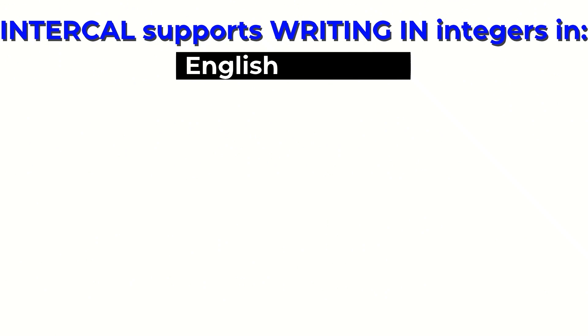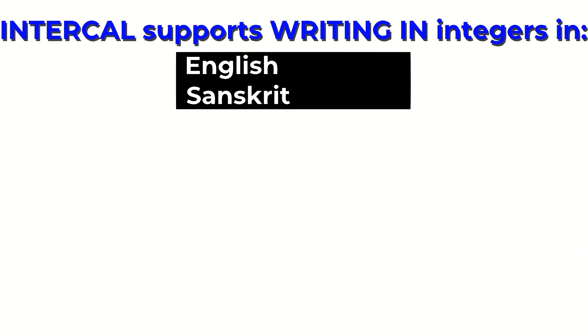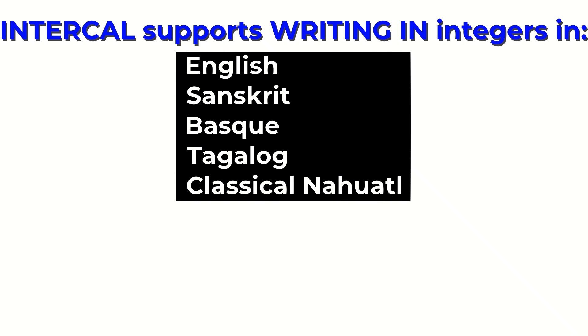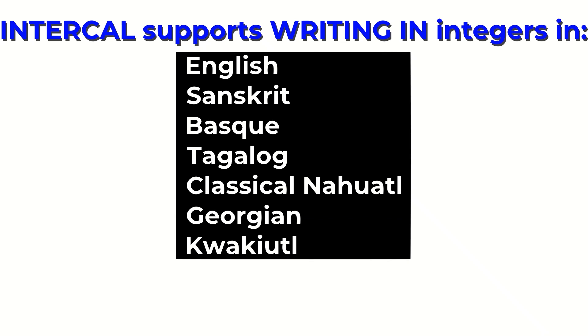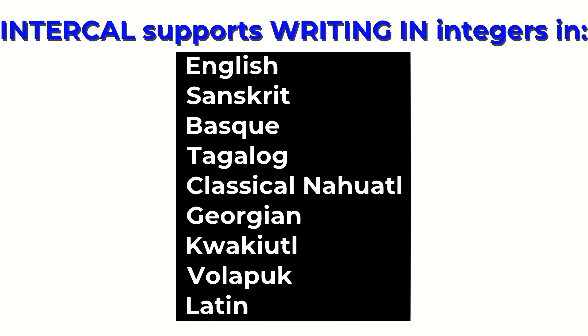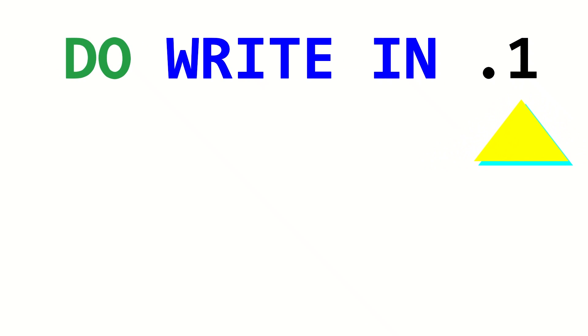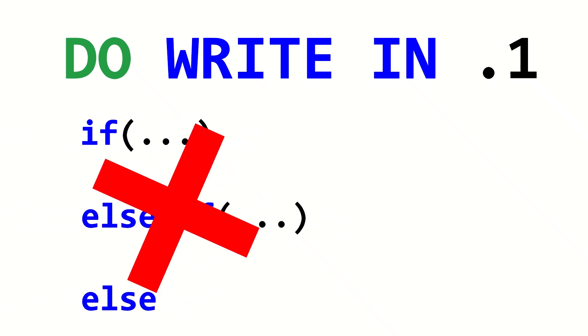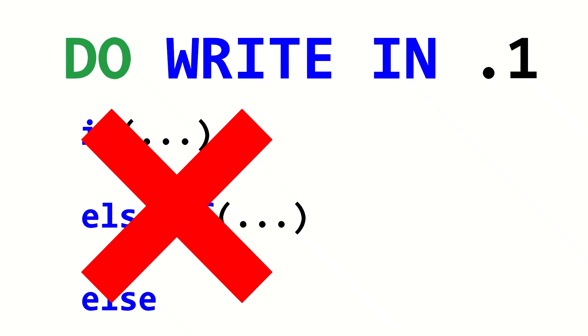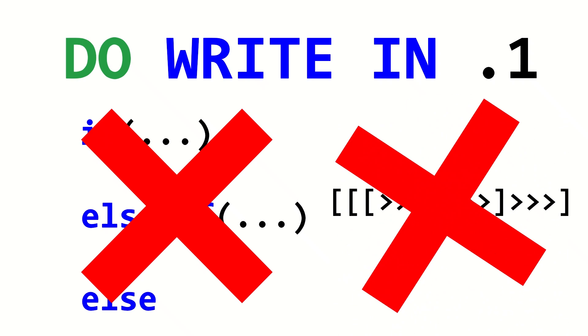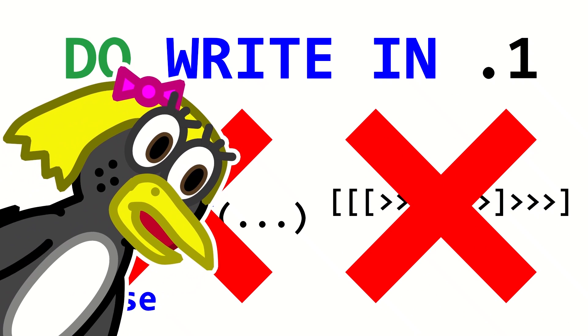English isn't the only language you can use. Intercal also supports writing in numbers in Sanskrit, Basque, Tagalog, Classical Nahuatl, Georgian, Kwakiutl, Volapük, and Latin — because of course it does. Now the player has typed a number and it's stored into the variable identified as Spot 1. We must now use that to determine the next action the program takes. But Intercal does not actually have a straightforward if-statement system, nor does it really have an alternative.